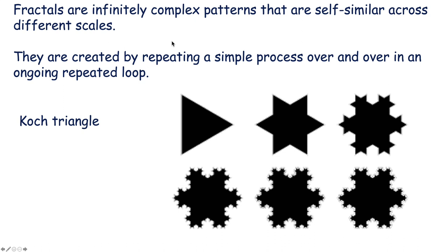Fractals are infinitely complex patterns that are self-similar across different scales. They are created by repeating a simple process over and over in an ongoing feedback loop. Take a triangle — you add on that triangle another triangle, then on every side another little triangle, and so on. This is called the Koch triangle, a paradoxical figure which is self-similar across levels and becomes increasingly jagged and complex, going from a simple surface of dimension two to almost a dimension of three, but not quite — so a fractal.